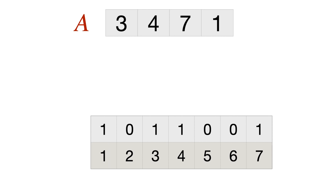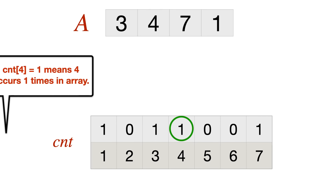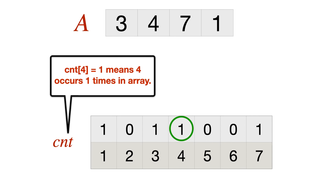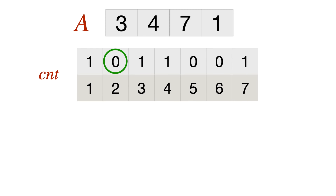A very initial idea is to use a count array. The indices represent numbers and the array values tell us how many times each number occurs. For example, count[4] = 1 means four occurs once in [3, 4, 7, 1]. Count[5] = 0 means five is not in the array. After scanning and maintaining the count array, we can easily find that two is the first index with value zero — meaning two is missing.